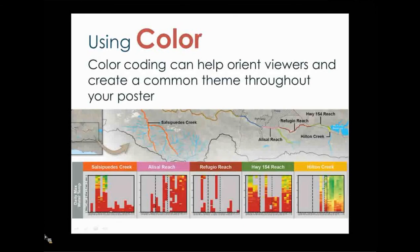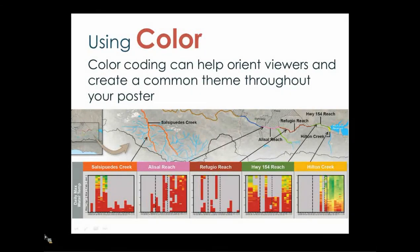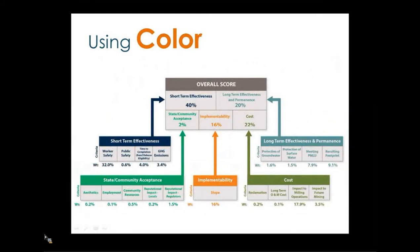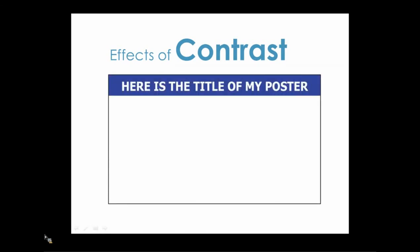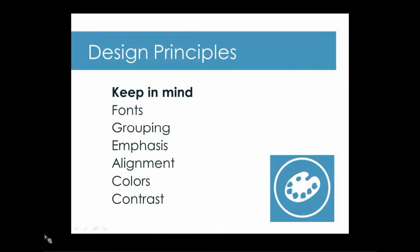Color coding can help orient viewers and create a common theme throughout your poster. Here is a great example: different reaches of a river were assigned a different color, so throughout the poster one would know what reach was being discussed by the color of the associated header. Contrast is another important design principle — using a big, bold, high-contrast title bar is much more exciting than plain text. Important design principles to keep in mind: choose appropriate and good-sized fonts; use grouping, emphasis, and alignment to help your poster flow well; use colors and contrast to add interest, but be careful not to go overboard. Always have colleagues or friends look over your design in the draft stage.